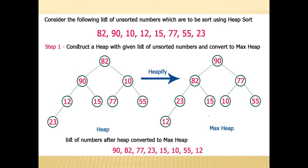Consider the following list of elements which we are going to sort using heap sort: 82, 90, 10, 12, 15, 77, 55, 23. These are the eight elements which we need to sort with the help of heap sort.